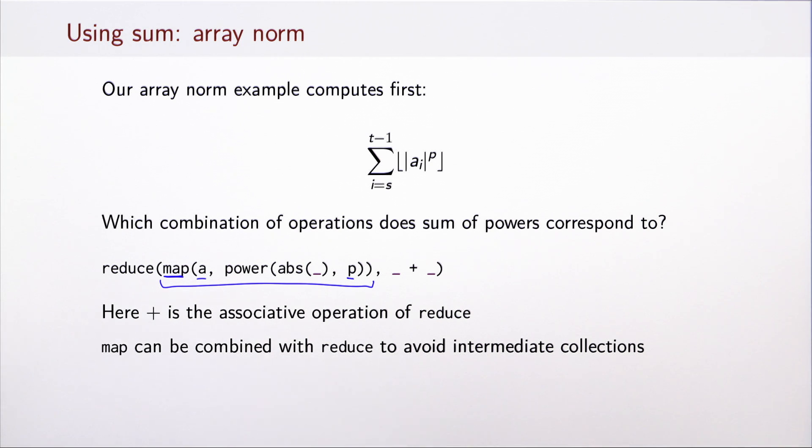You may recall from our implementation of array norm that we only had one traversal of the array, and this is because this map can in fact be combined with reduce. Because map simply applies a given function to every array element, we can apply that same function at the point where reduce would retrieve the elements from the array. This avoids the overhead of building intermediate collections. This improves both memory and performance characteristics of our program because we avoid this unnecessary allocation.